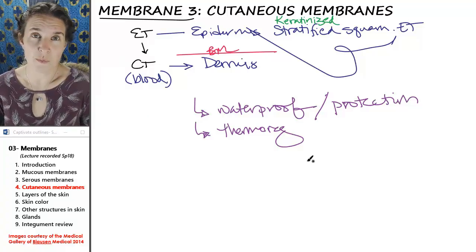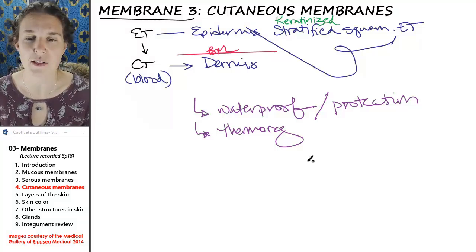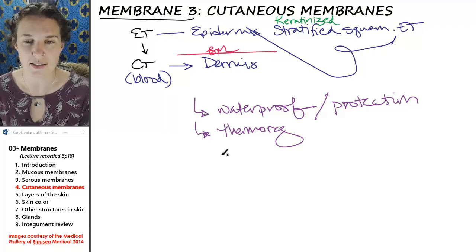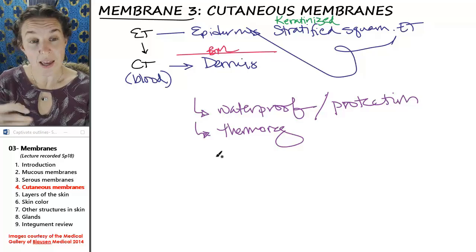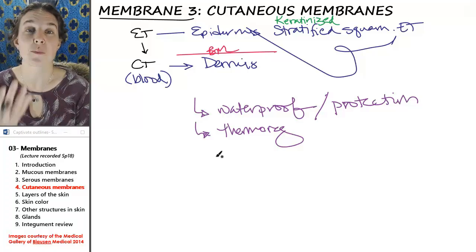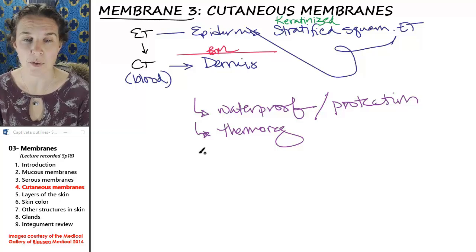As opposed to maintaining 98.6 or whatever the homeostatic temperature is in your body. So skin also has sweat glands which participate in thermoregulation.